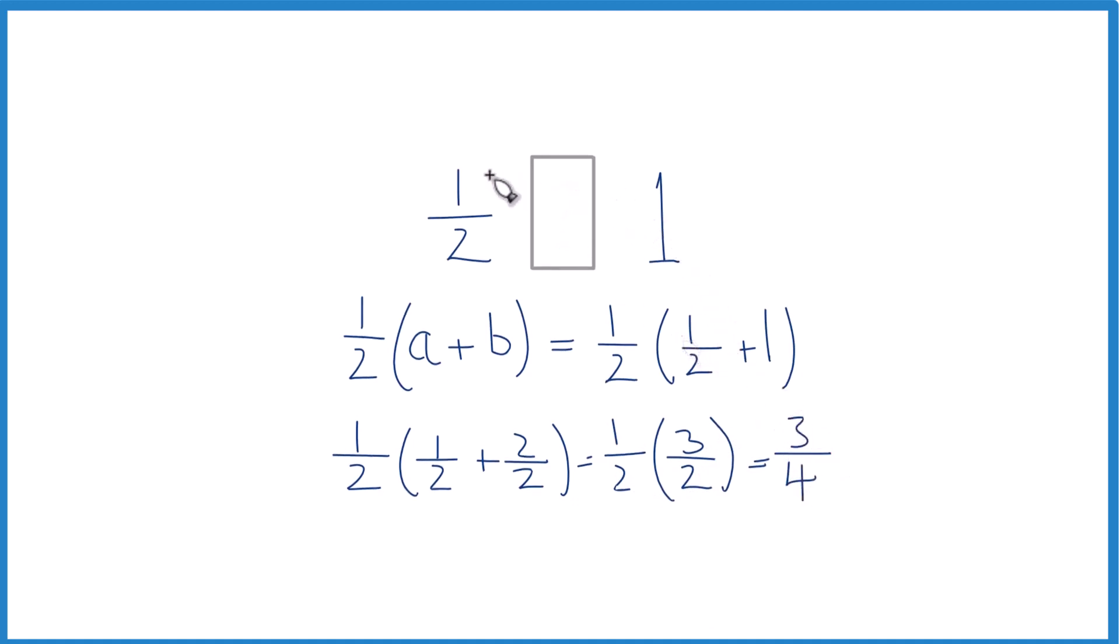So in answer to our question, between one-half and one, exactly between one-half and one, is the fraction three-fourths. With this general formula you can use it to figure that out. You could look at a number line and probably reason it out from there, but this is pretty useful in mathematics. It's Dr. B, thanks for watching.